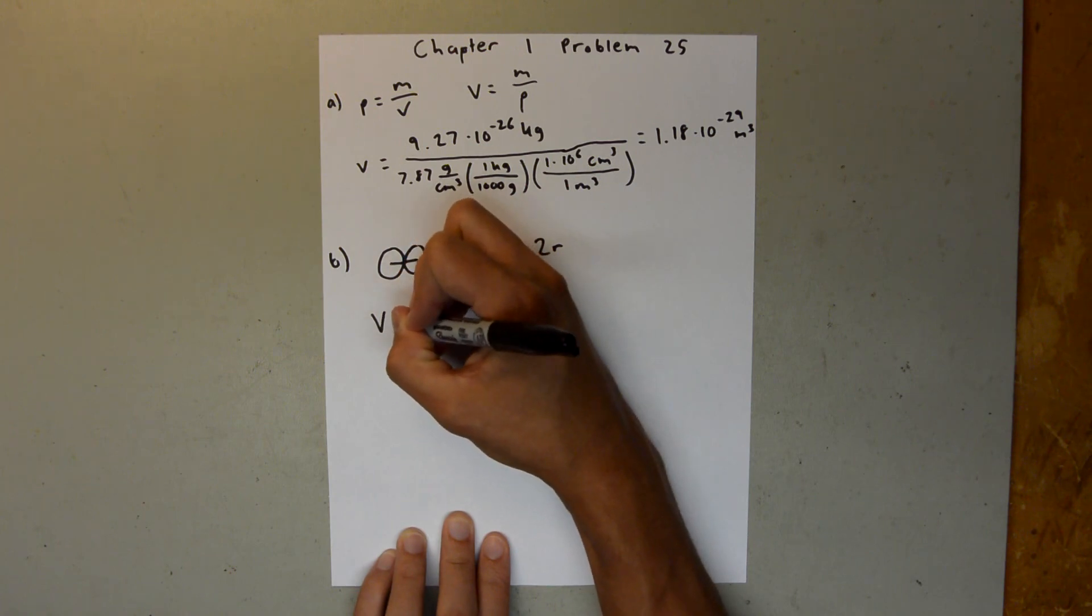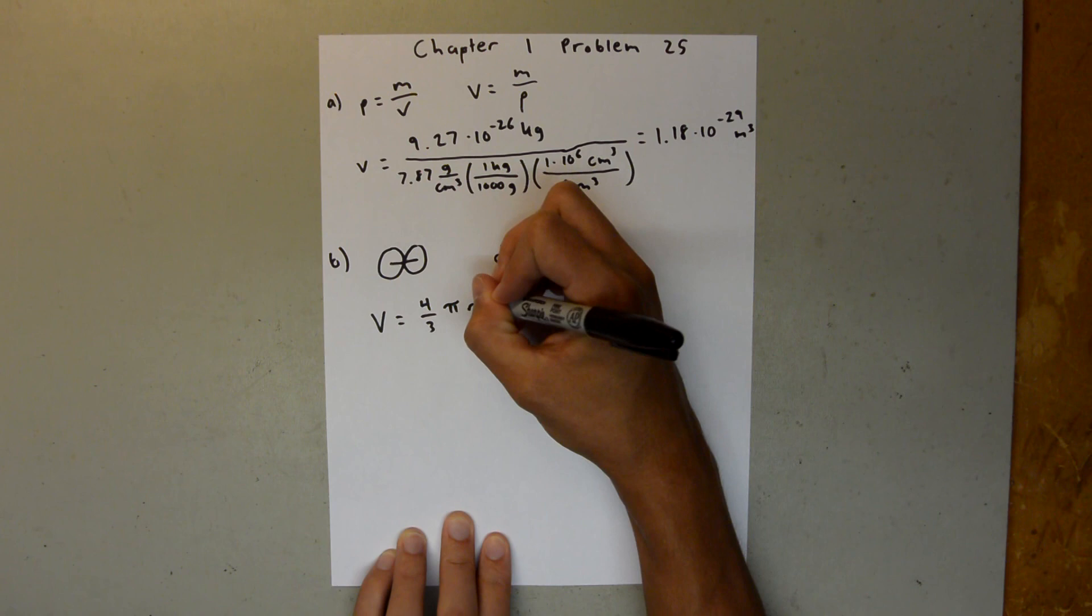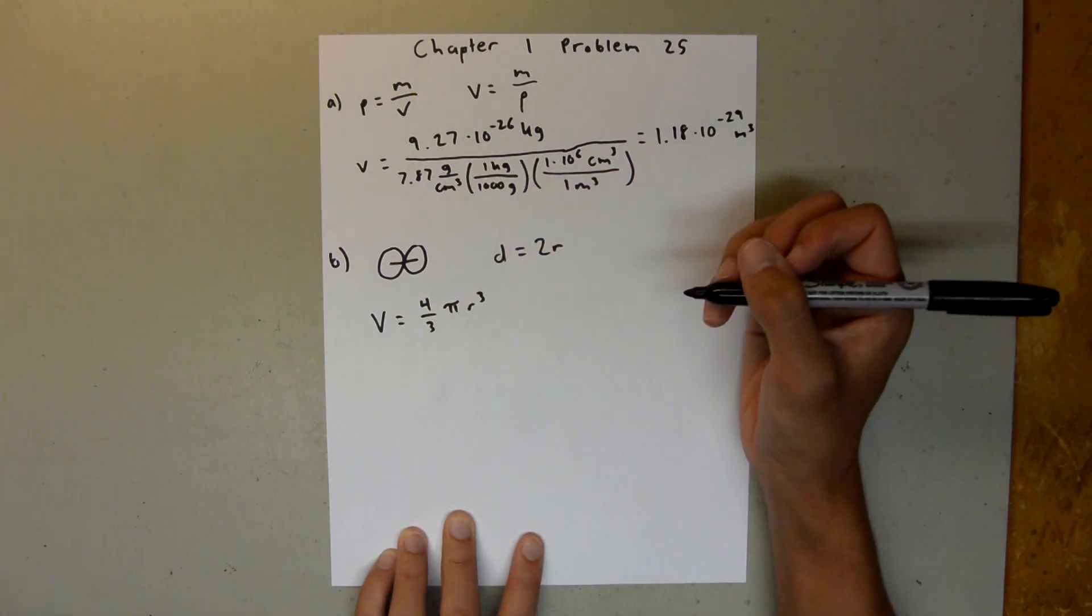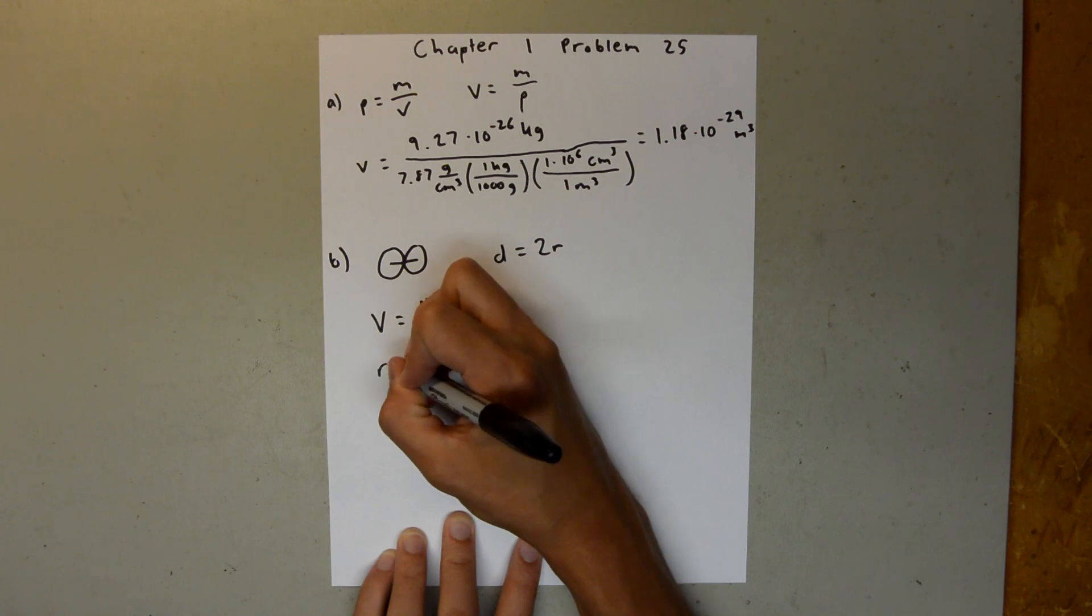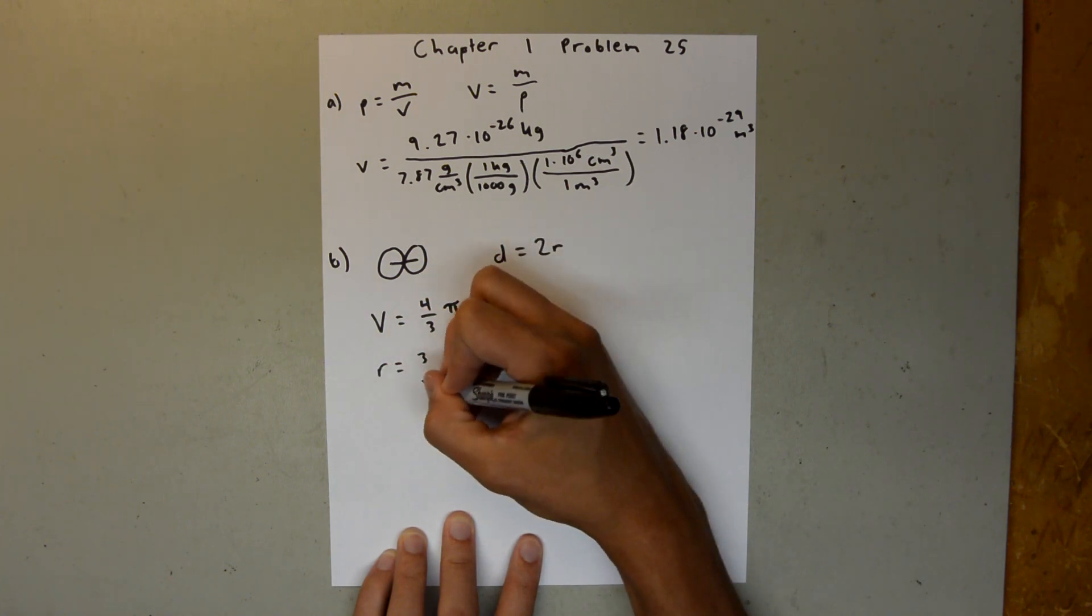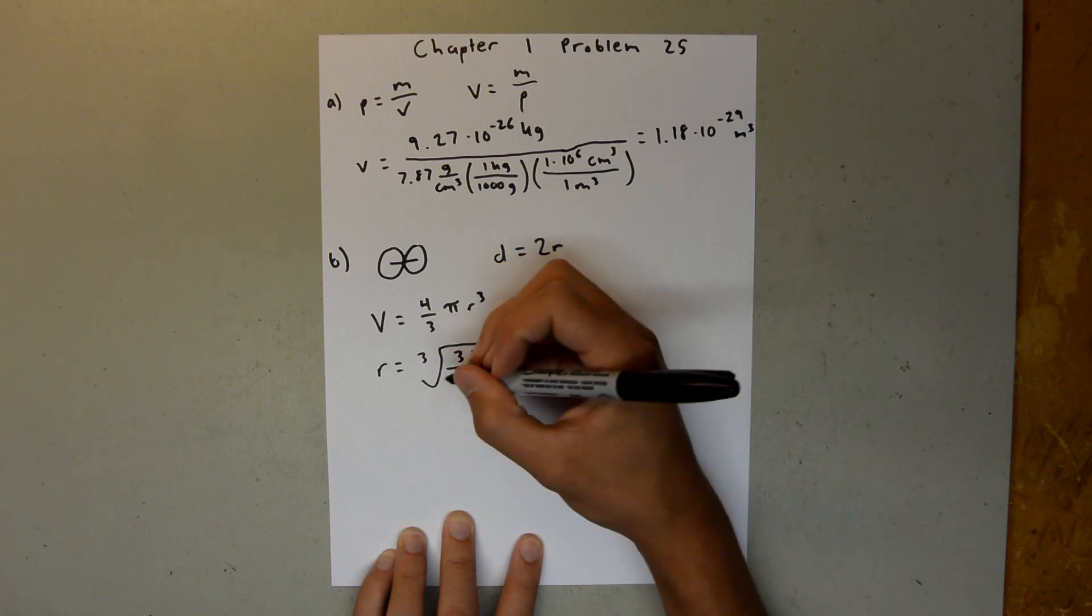And we can say volume is equal to 4 thirds pi r cubed, that's for a sphere, and we can rearrange that for the radius, and we can say r is equal to the cube root of 3 times the volume over 4 pi.